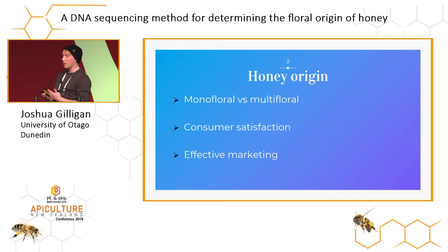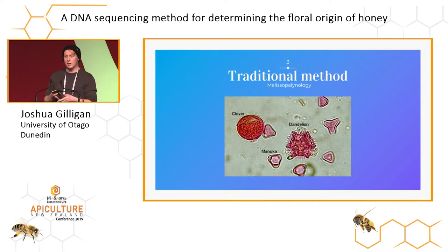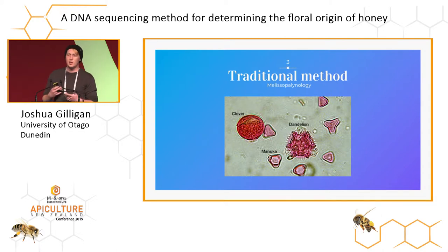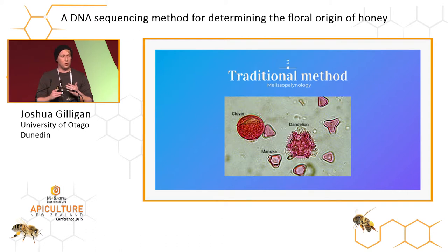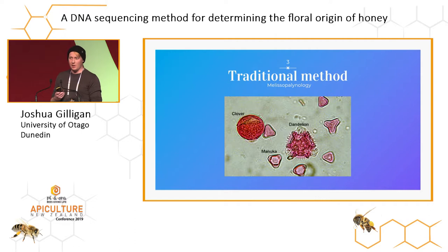So how do we go about determining what plants have actually been used for honey? The old way is melissopalynology — you get the honey, take pollen from it, look at it under a microscope, and try to identify it based on physical characteristics like shape, size, and color. This can have a lot of problems because two pollens from the exact same plant can look almost entirely different based on orientation or field of view, and even expert analysis has its own innate problems with human error.